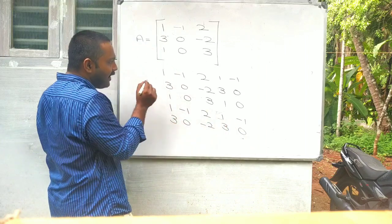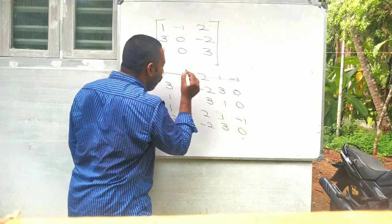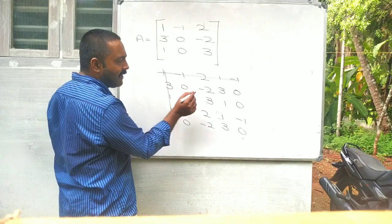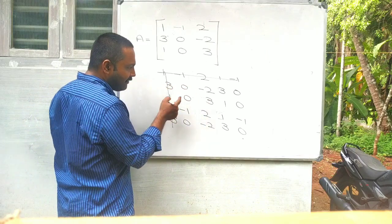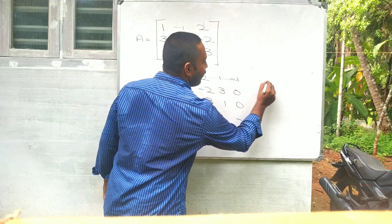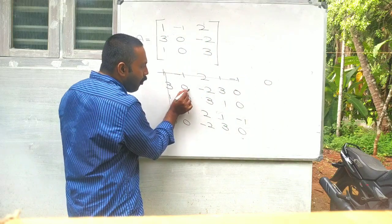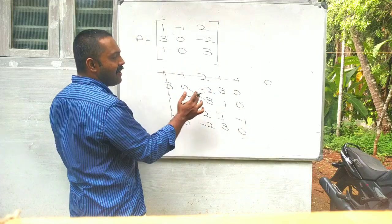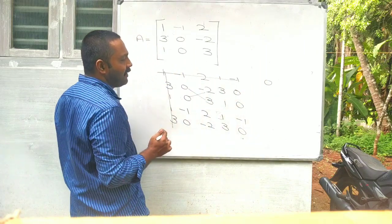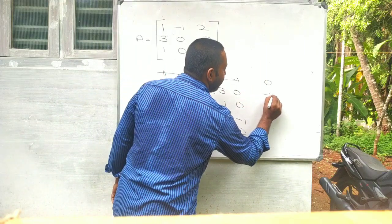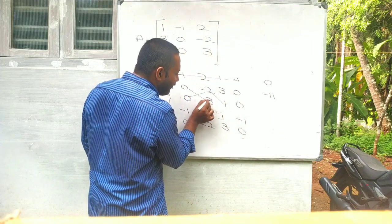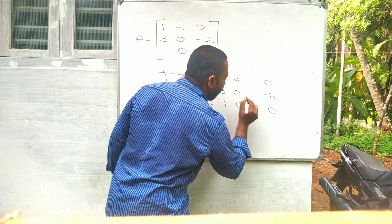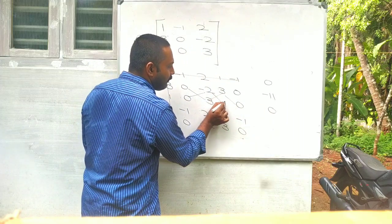Then deleting our first row and first column. Then expand the second order. 0, 0. Row wise. Adjoint column wise. Minus 2, minus 9, minus 11. 0 minus 0, 0.